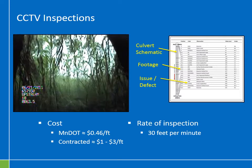CCTV inspections generate very valuable video documentation for a relatively low cost. MnDOT owns several CCTV units. If you disregard the cost to purchase the camera and truck and only consider labor, also disregarding travel cost, a CCTV inspection with in-house staff is estimated to cost about 46 cents per foot for a two-person crew. You could also hire a contractor; a ballpark contracted cost in Minnesota runs about one to three dollars per foot — a pretty wide range but a good estimate for budgetary purposes.